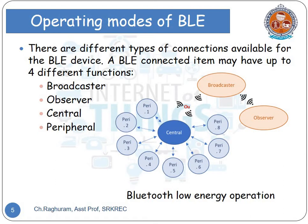The system goal is to ensure universal data transmission by using the standard process, so that other devices may also read and understand the data. This diagram specifies peripherals P1 to P8, a central, a broadcaster, and an observer.